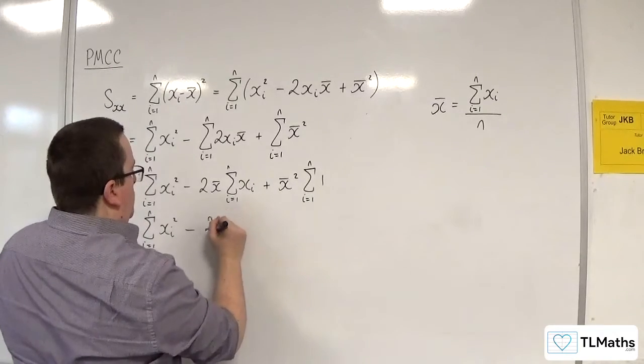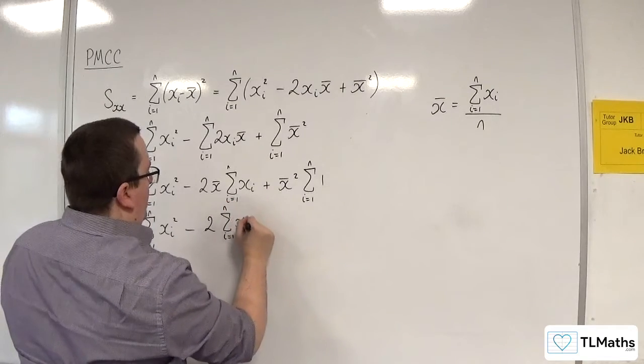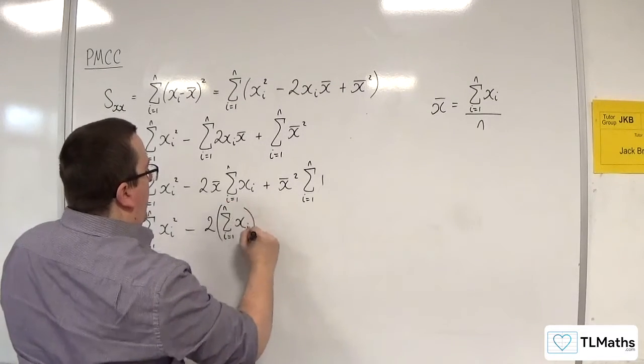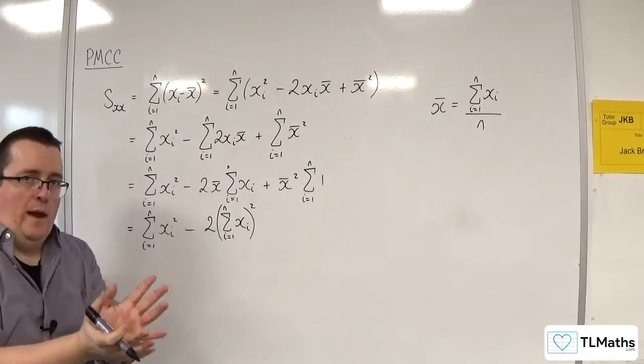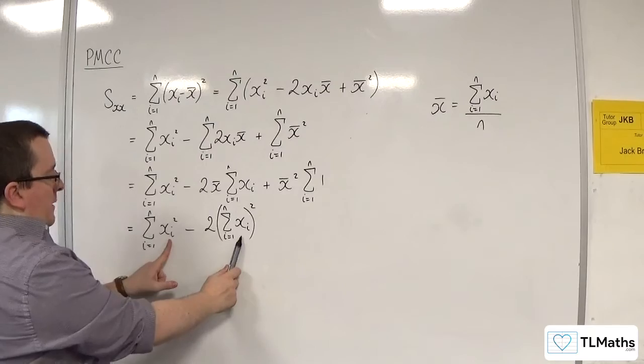So let's write that as 2 times the sum from i is 1 to n of XI, now that's squared - it's the whole thing squared, not just the XI. So don't get these two things confused.